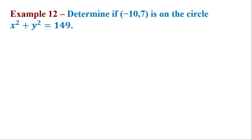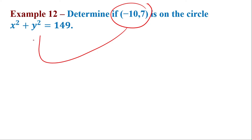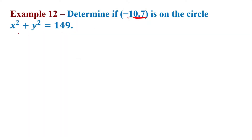For number 12, determine if negative 10 comma 7 is on the circle. If a circle passes through a certain point, meaning that point is a solution for the equation of the circle. So all we have to do is substitute it to see if it would be equal to 49. If it is equal to 49, then it is part of the circle.